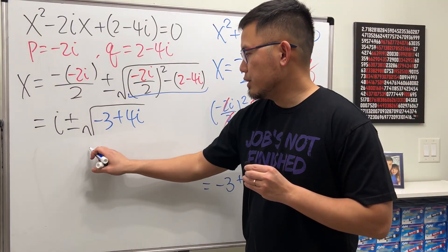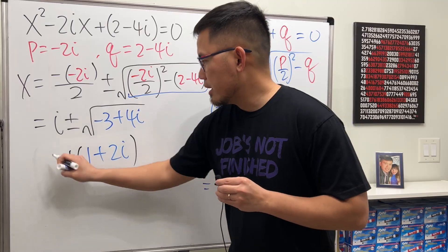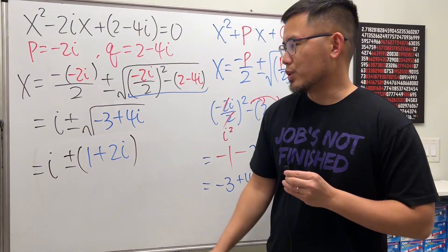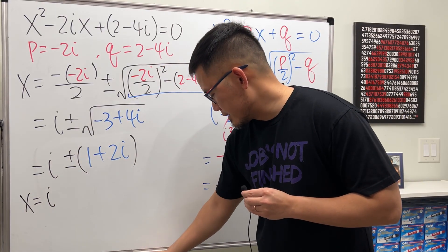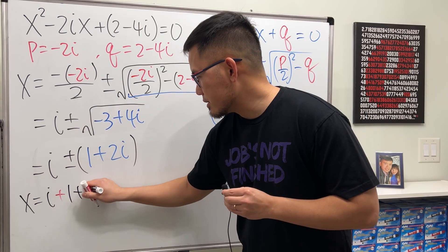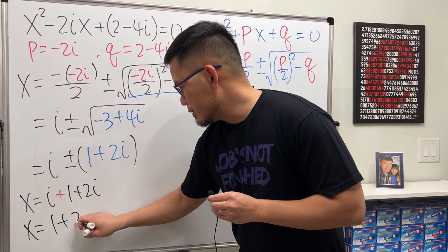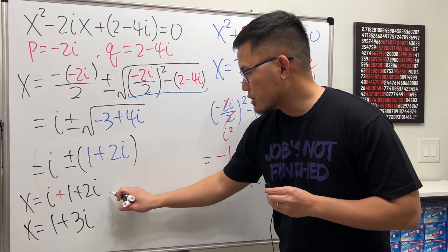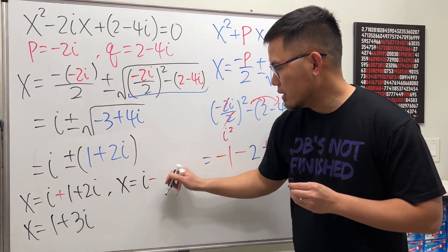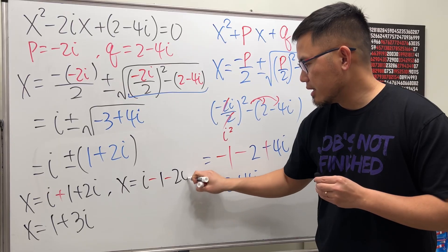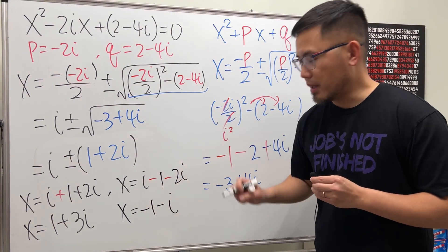Going back to our expression, the result is i plus or minus (1 plus 2i). For the first solution, taking the plus: x equals i plus 1 plus 2i equals 1 plus 3i. For the second solution, taking the minus: x equals i minus 1 minus 2i equals negative 1 minus i. And we're done.